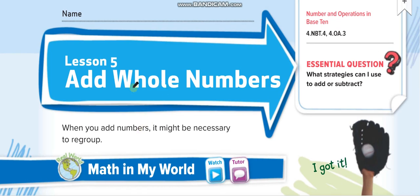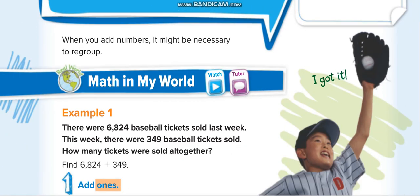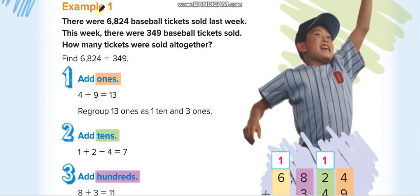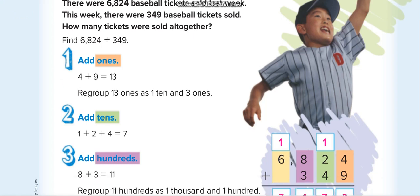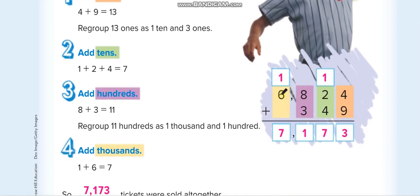When you add whole numbers, it might be necessary to regroup. In the first example, they ask us to add these two numbers: 6,824 and 349. We write 6,824 up and 349 below. When we add 4 plus 9, that equals 13. We write 3 down here and 1 up. When we write 1 up, that is known as regrouping.